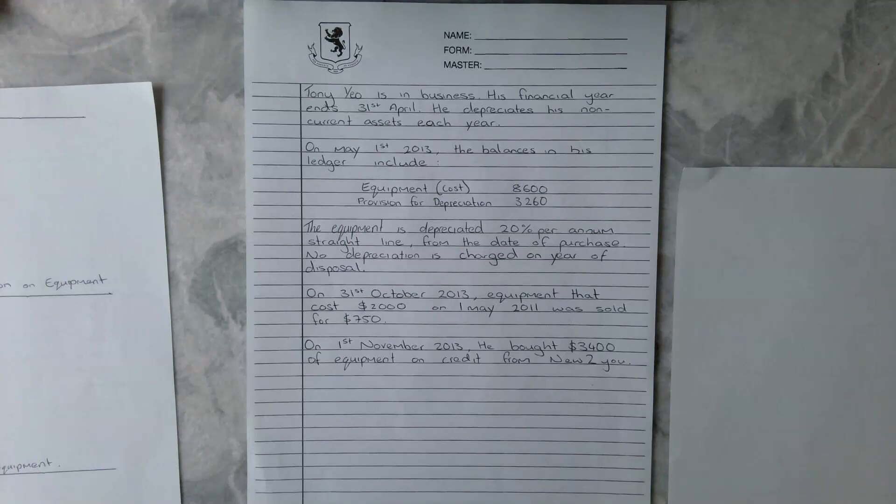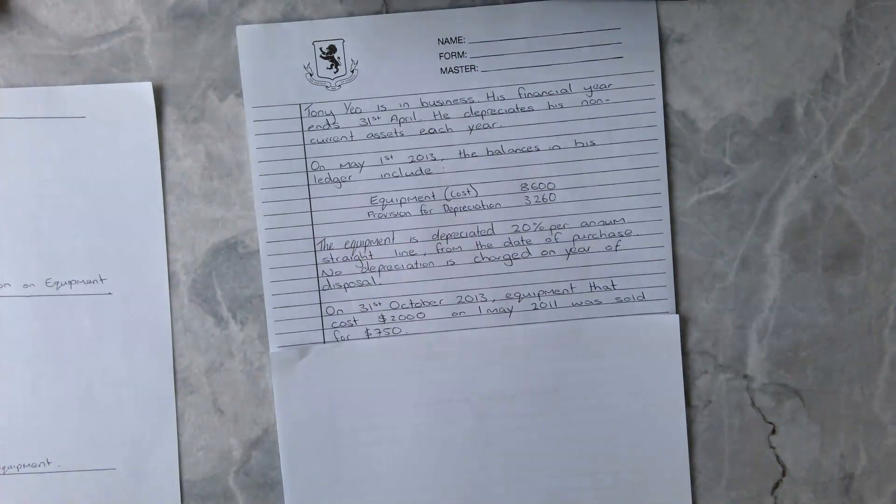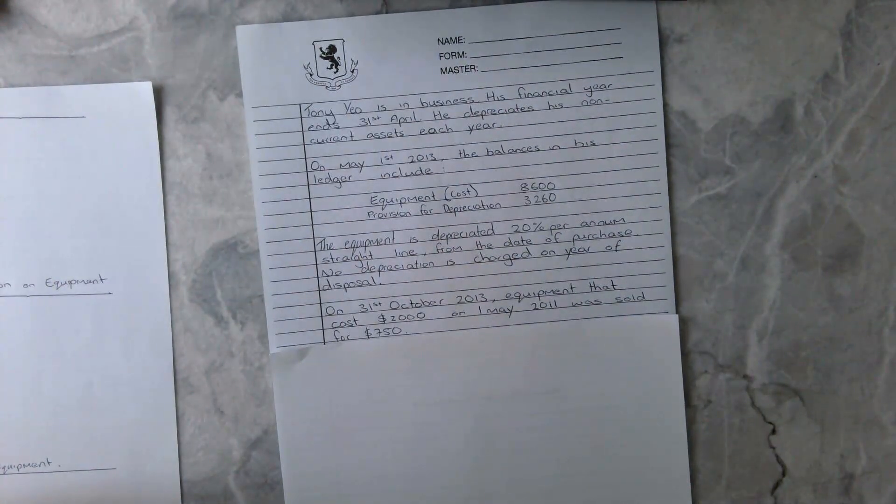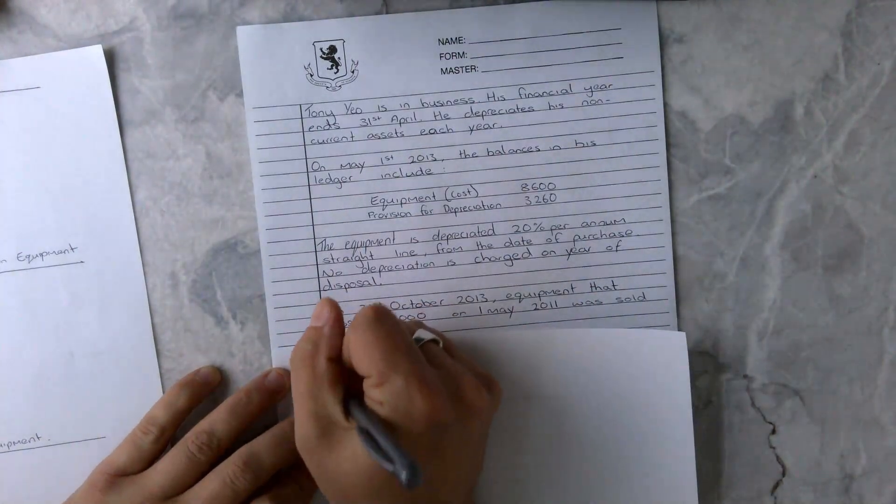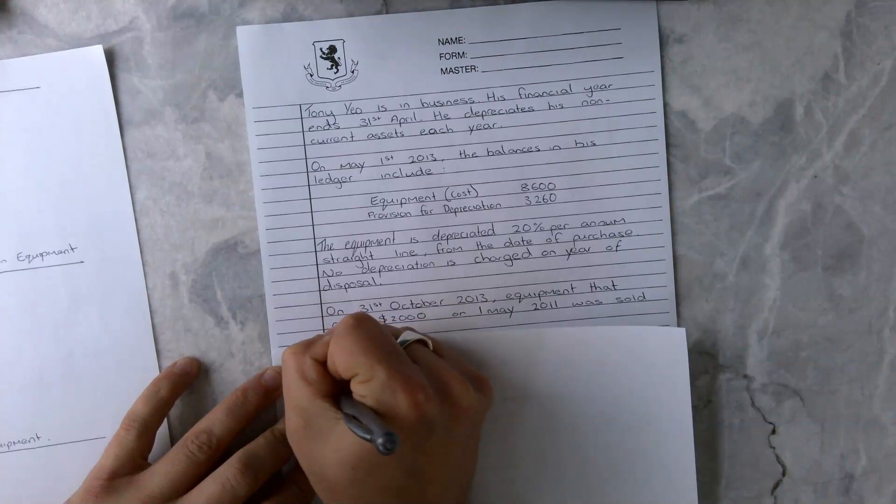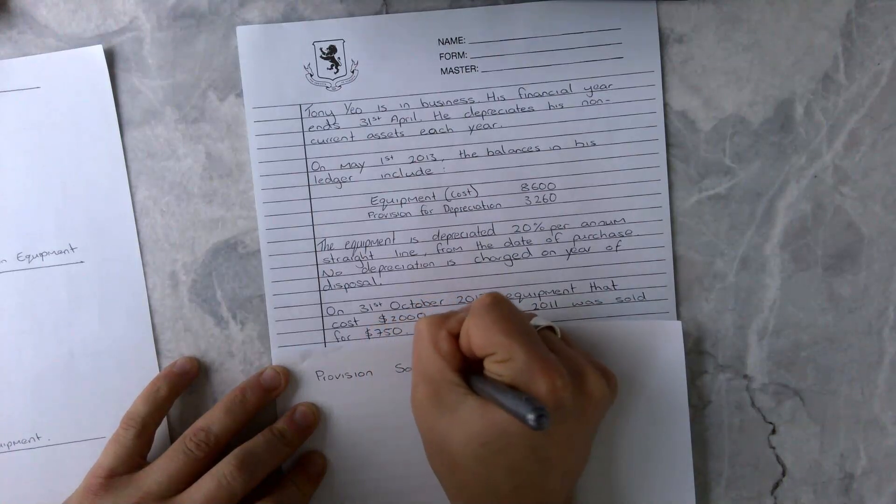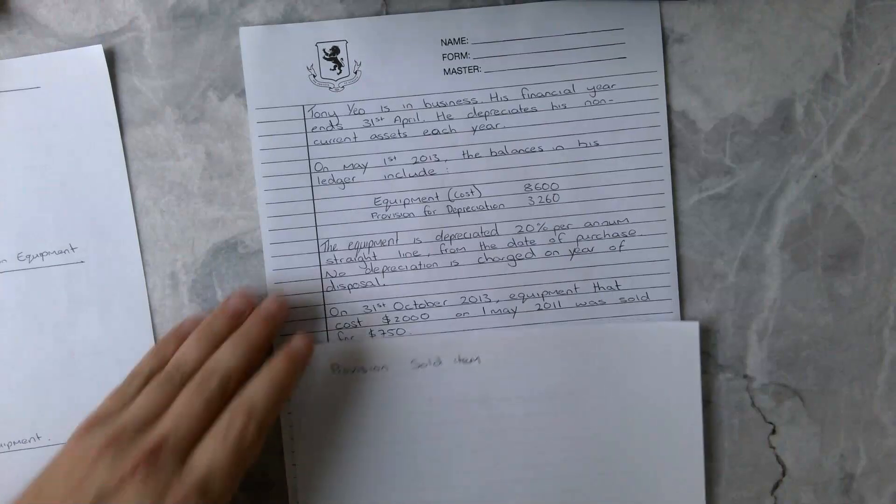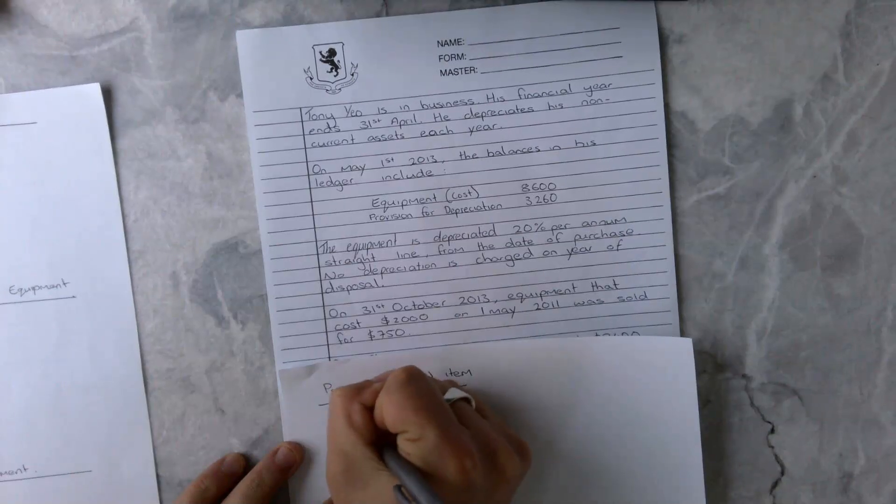What I would start to do is I think a lot of people overthink these. We need to play into our strengths here and say May to April 31st, so he needs to depreciate two years worth of depreciation using the straight line method. We're going to do part one first. Our provision for depreciation on the sold item - that's what we're going to work out first. It cost us $2,000 in 2011.